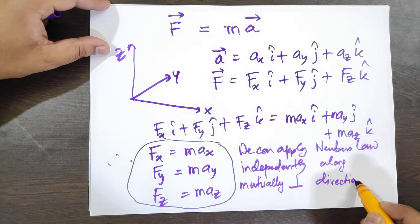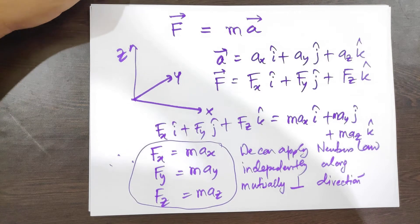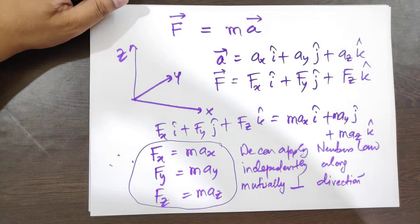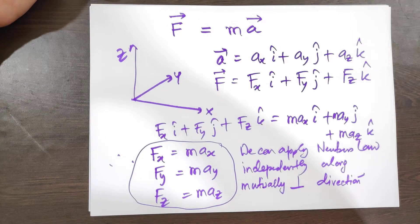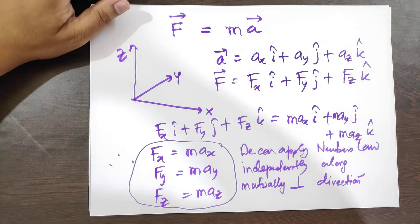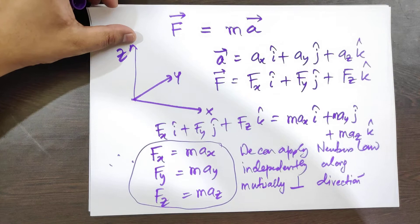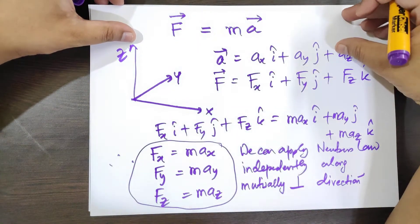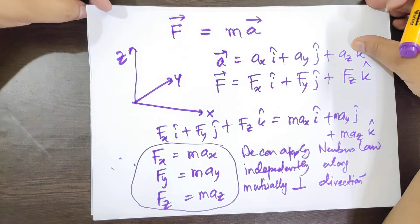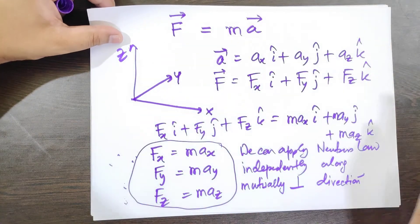We can apply Newton's law independently along mutually perpendicular directions. That means the acceleration in the y-axis is not affected by the force in the x-axis or z-axis, and vice versa. The force in the z-axis has no impact on acceleration in the x or y axis because they are mutually perpendicular directions. This is proved from vectors only.